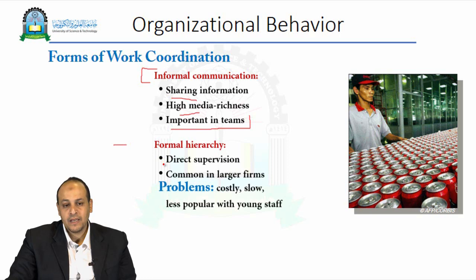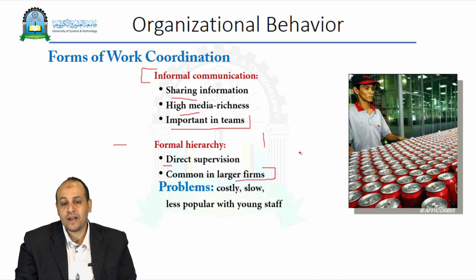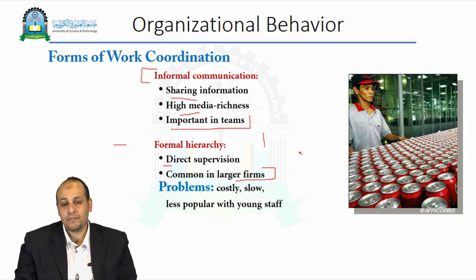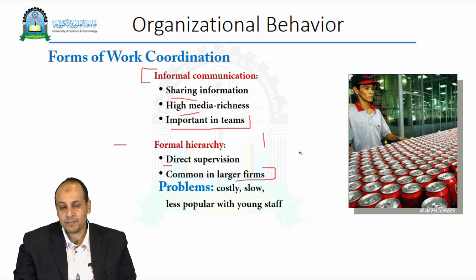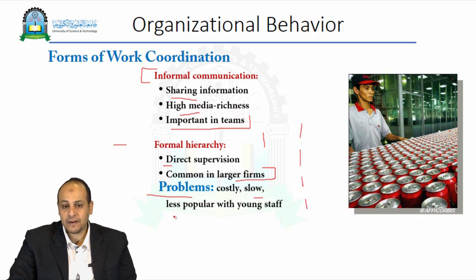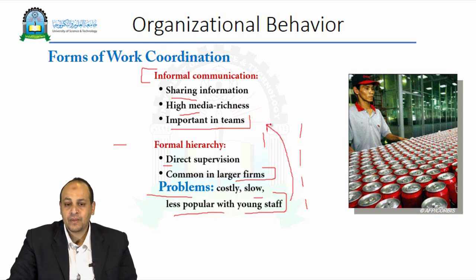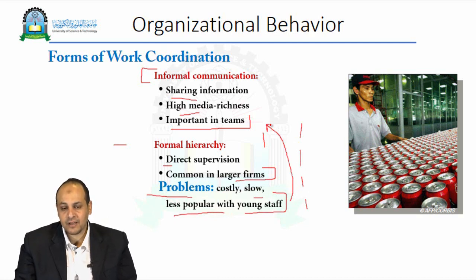We also have formal hierarchy, where the coordination of work comes in steps according to the organization's hierarchy. Direct supervision flows from top downward and is common in large firms. In large firms, formal hierarchy is quite common because without it, information can be distorted and time can be wasted. The problems here are that it is quite costly and slow, because information has to go through different layers and hierarchies. It is also less popular with young staff, who tend to prefer informal communication.